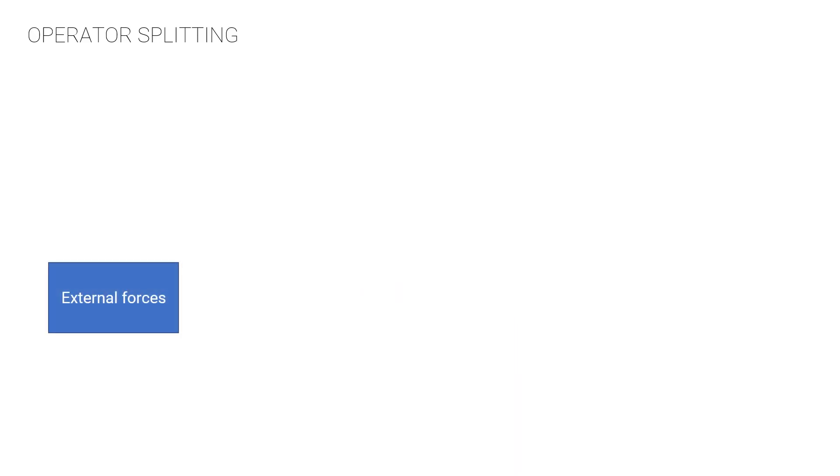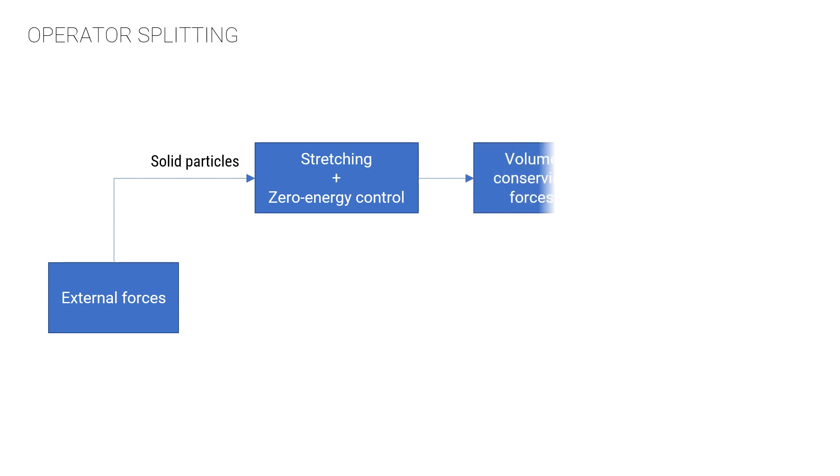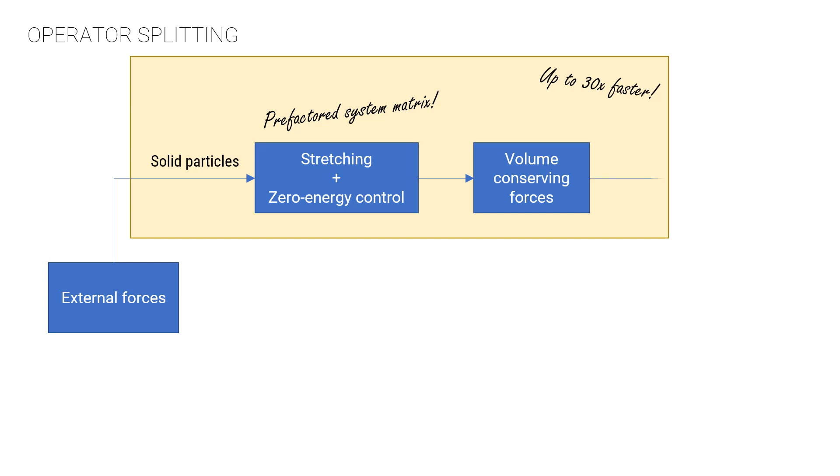We develop an operator splitting scheme in which we employ a new SPH adaptation of the fast co-rotational method of Kugelstadt et al. to leverage prefactored system matrices for faster linear system solves. We demonstrate more than an order of magnitude improvement in computation time compared to state-of-the-art, and we further extend the formulation to include coupling with fluids.